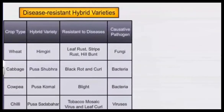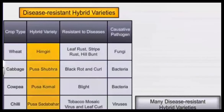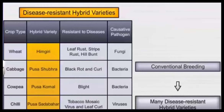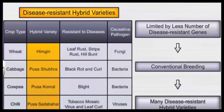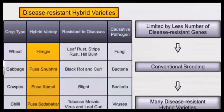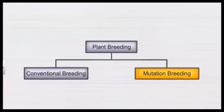Though by a conventional method we can produce disease resistant varieties, there are many limitations, because there are very few disease resistant varieties already available and it is a cumbersome, long process. So we can switch over to a better scientific process called mutation breeding.